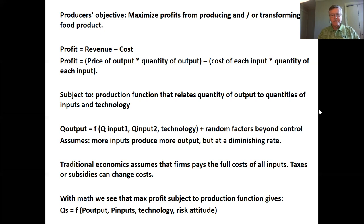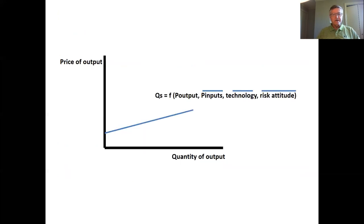When we optimize that profit function subject to the production function, we get the quantity supplied function. Quantity supplied Qs is a function of the price of output, the price of inputs, technology, and people's attitudes toward risk. Risk is important, and how you respond to it depends on the attitude of the individual farmer. As we did for the demand function, if we hold price of inputs, technology, and risk constant, then we can map a relationship between quantity supplied and price of output, which is what we call our supply function.